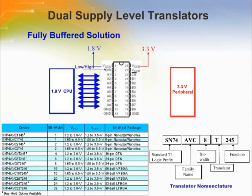Dual supply devices are designed for asynchronous communication between two buses of devices operating at different supply voltages. These devices use two supply voltages: VCCA to interface with the A side and VCCB to interface with the B side. For bi-directional level translators, data is transmitted from A to B or B to A depending on the logic level at the DIR input. On devices with an output enable control input, the A and B buses are effectively isolated when OE is inactive.